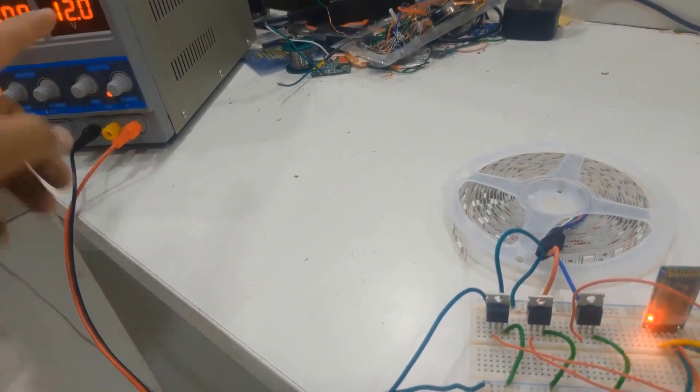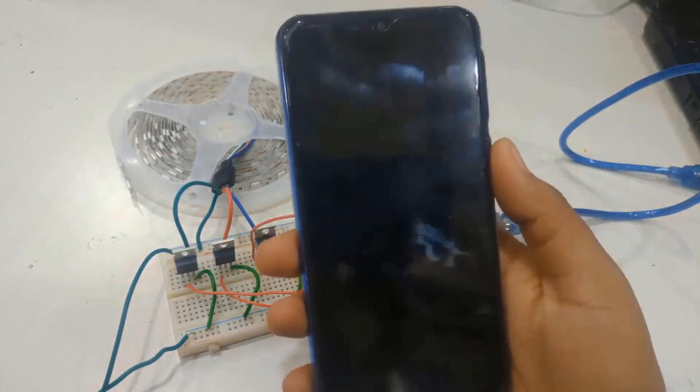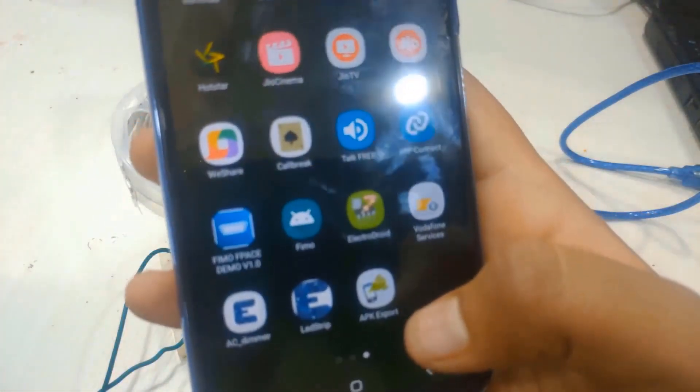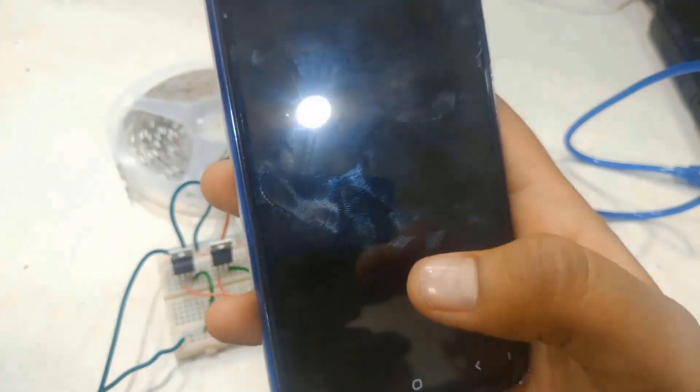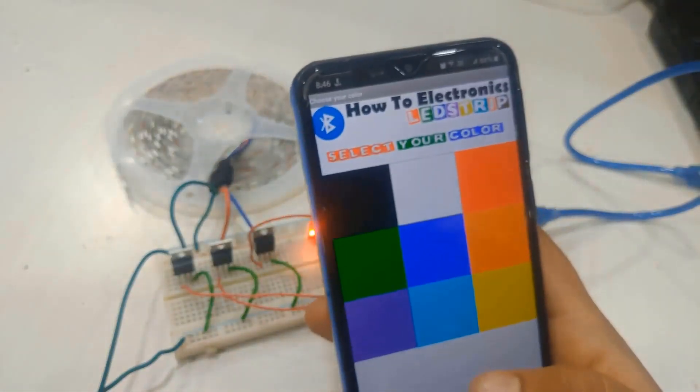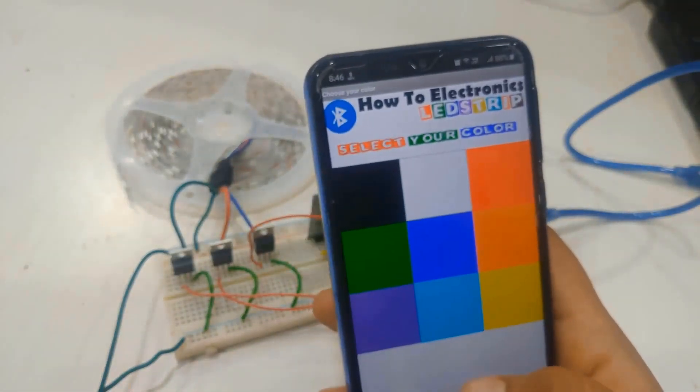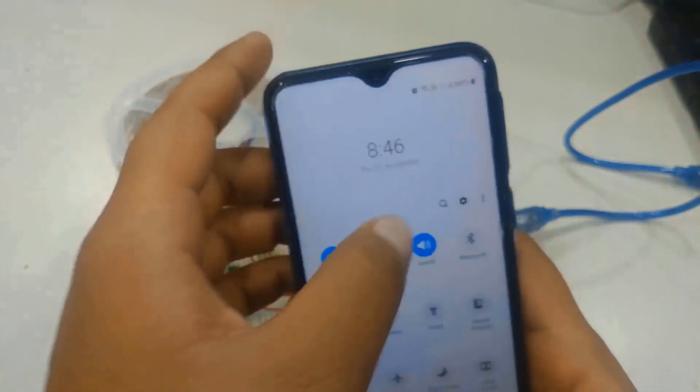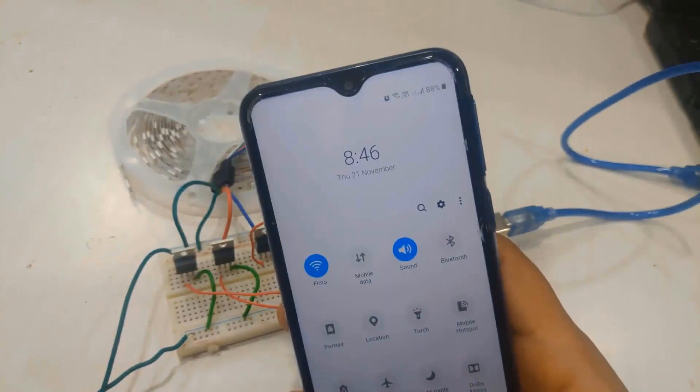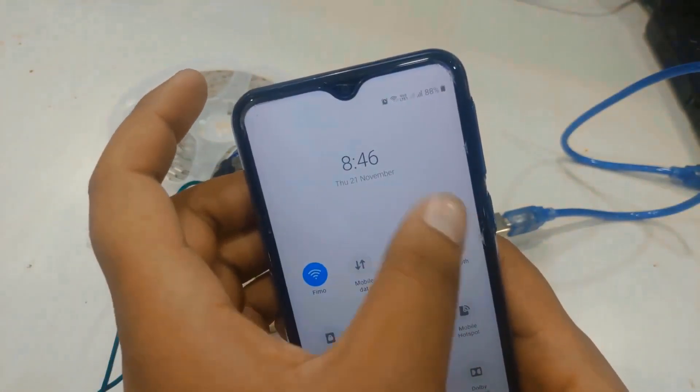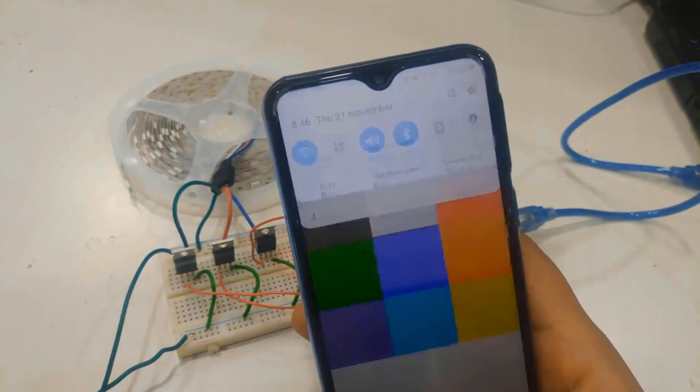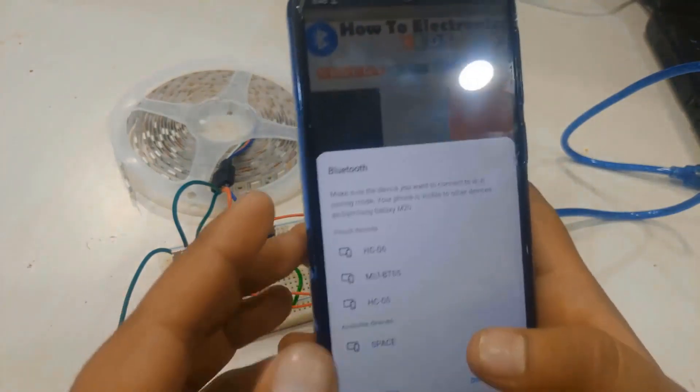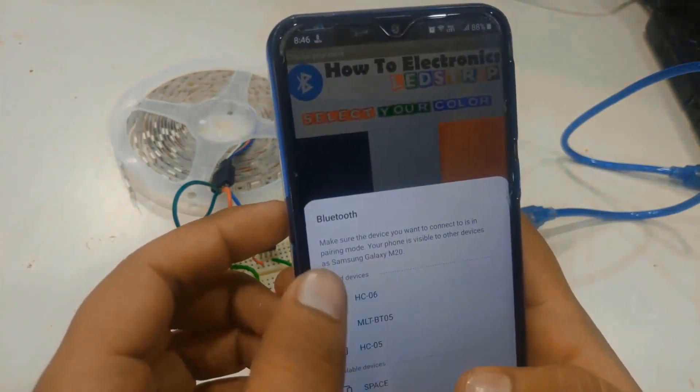Now you need to control this RGB LED strip with Bluetooth. In that case, we have an Android app. I have given the link of this Android app in the description. Before doing this, you need to turn on your Bluetooth, as the communication is between master and slave. Scan the Bluetooth, and you will get HC-05 or HC-06 something like this.